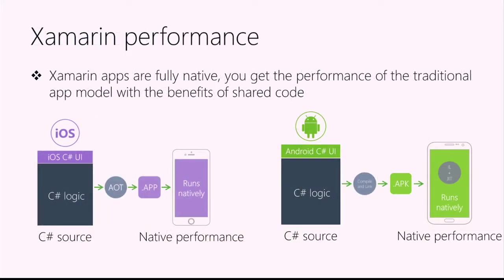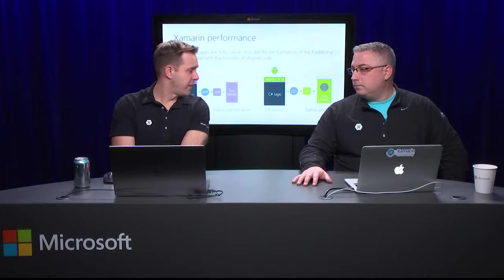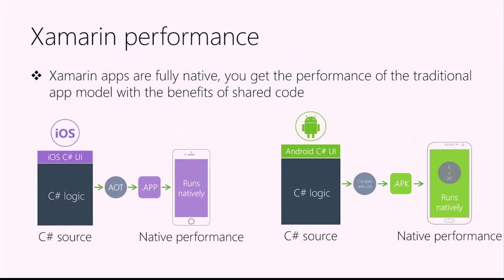I want to talk about performance. We're writing in C# but using the native tools to compile our applications — we're not running in a shell or an emulated environment. We're compiling a native iOS application. When Xamarin compiles your C# code, that binary is indistinguishable from a binary written in Swift or Java. We're using the same tool chains, the same binary format, compiled applications — we get that native performance. And the same is true for Android.